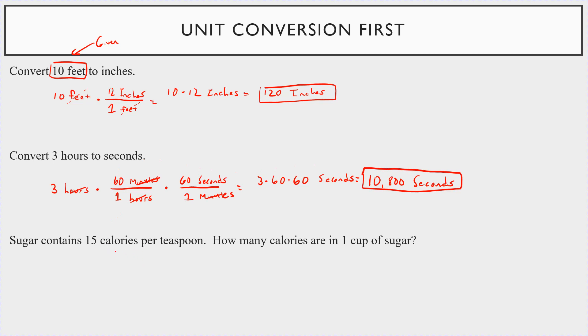Now this is interesting. So look at this. Sugar contains, this is a fun problem. Sugar contains 15 calories per teaspoon. How many calories are then in one cup of sugar? So the trick here is you want to get rid of teaspoons, and you want calories per cup. So you want teaspoons up here in cups down here.